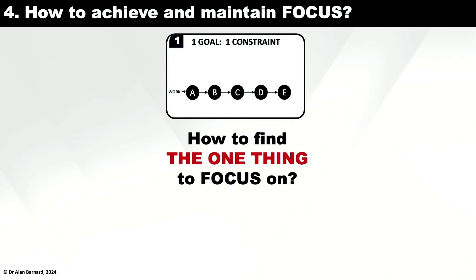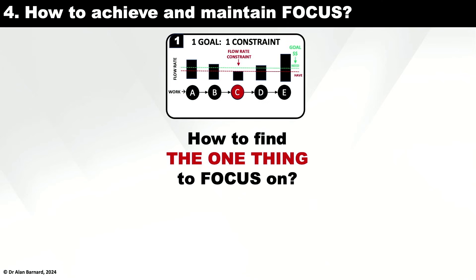I have a goal. There's work I have to do to achieve that goal. The work follows a process, and I need resources to man the process. The goal puts a demand — it tells me what I need of each resource — and then I can compare it with what I have. Any resource I don't have enough of is a constraint; it's a flow rate constraint.